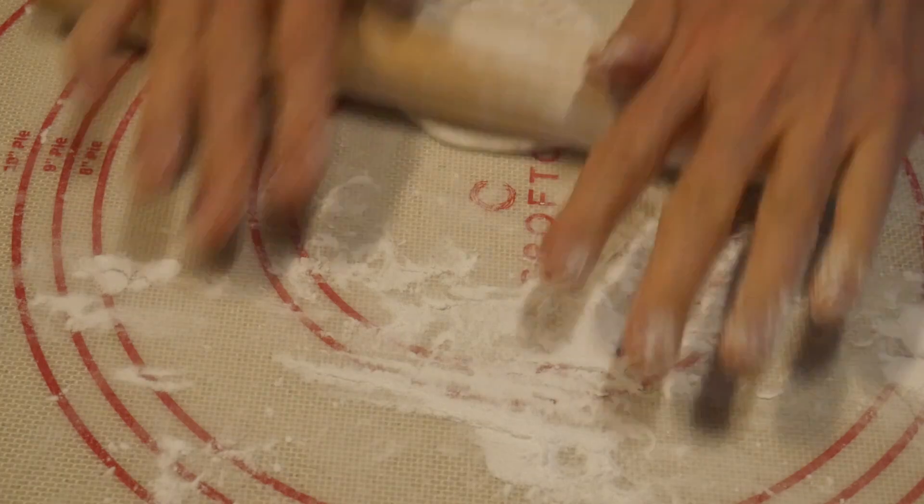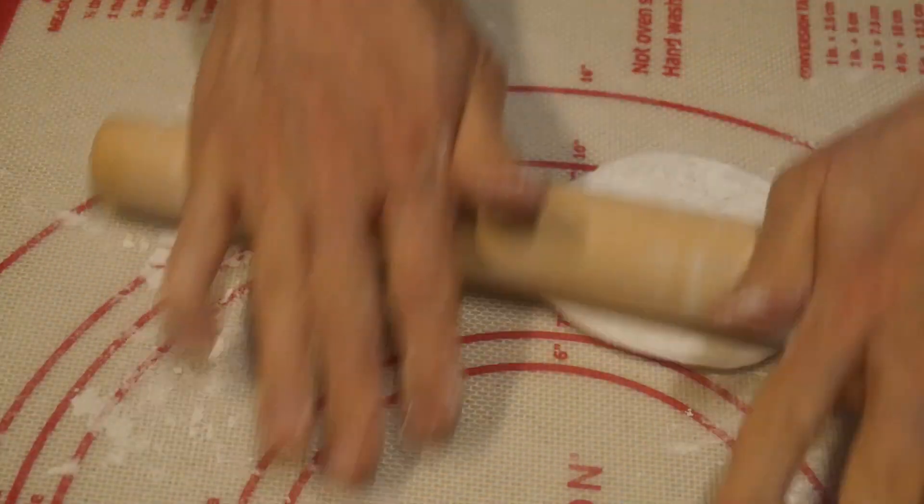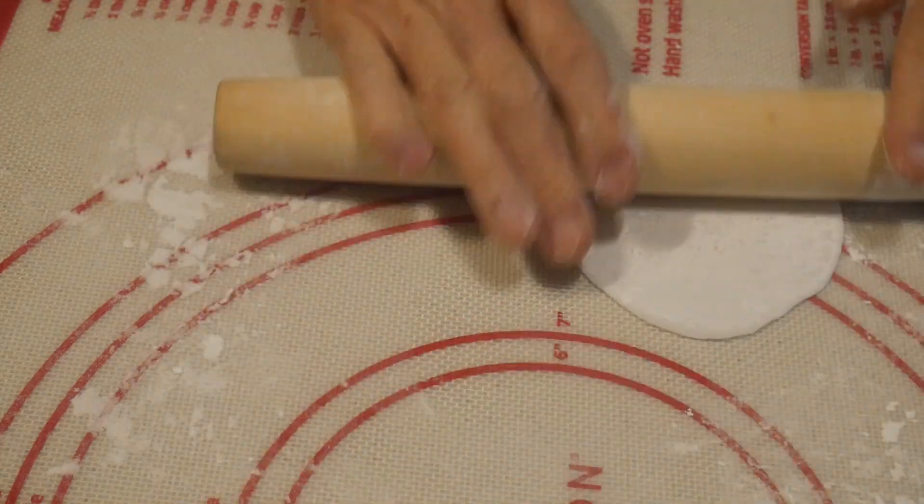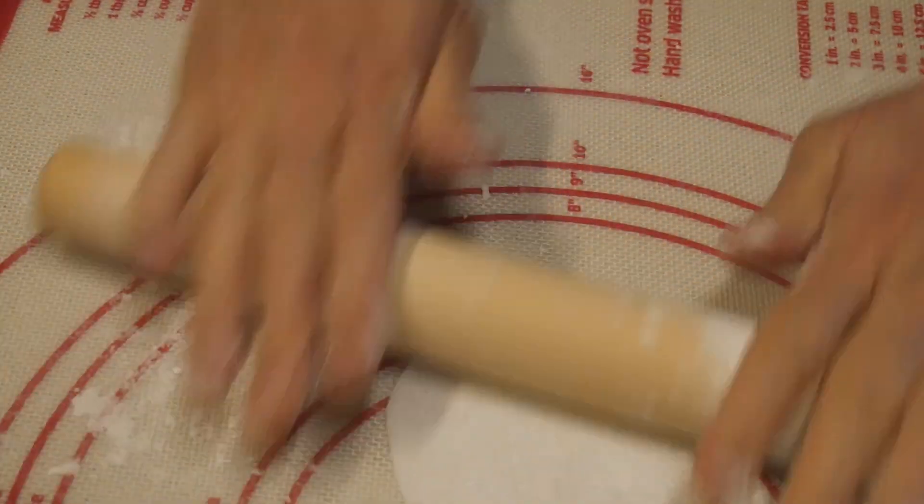So now by understanding the purpose and the significance of different types of starch that are present in this mix, you can actually make substitutions of the wheat starch with other types of starch.